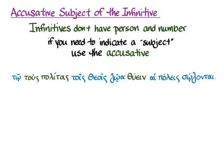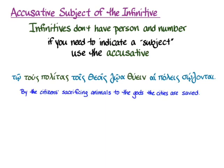Here's another example with an articular infinitive in the dative: 'to tus politas tois theois zoa thuain hai poleis sozontai' — 'by the citizens sacrificing animals to the gods, the cities are saved.' 'To thuain' is our articular infinitive, and 'tus politas' are the subjects of thuain — they're the ones doing the sacrificing. Sometimes you'll have to make a logical or context decision about which accusative is the subject, since infinitives can also have accusative direct objects. Here we have both 'tus politas' and 'zoa,' but it would be unusual for animals to be sacrificing the citizens to the gods — so context can tell you almost every time which accusative to choose as the subject.